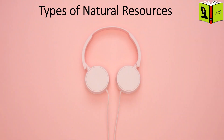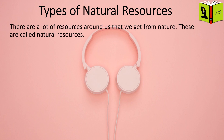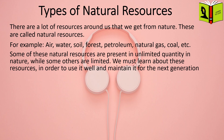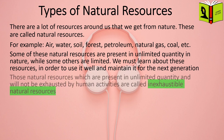Types of natural resources: there are a lot of resources around us that we get from nature — these are called natural resources. For example, air, water, soil, forest, petroleum, natural gas, coal, etc. Some of these natural resources are present in unlimited quantity in nature, while some others are limited. We must learn about these resources in order to use them well and maintain them for the next generation. Those natural resources which are present in unlimited quantity and will not be exhausted by human activities are called inexhaustible natural resources.